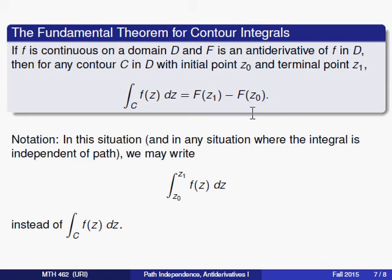Now because this completely ignores what the path was, all we had to do was take the antiderivative, which didn't depend on the path, and then evaluated the endpoints, we're going to, in our notation, just write the endpoints rather than C. And in fact, we'll do this not only when we have an antiderivative, but in any situation where the integral is independent of path, you'll find it common to write the endpoints rather than the notation for the contour C.